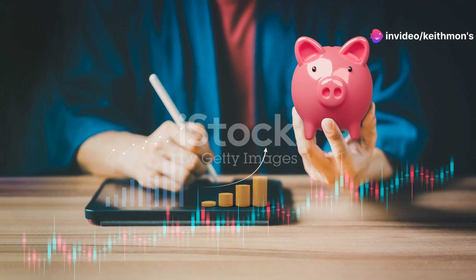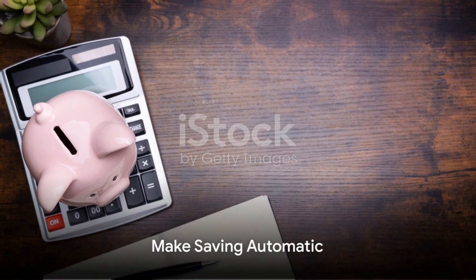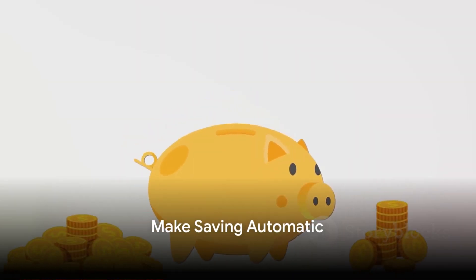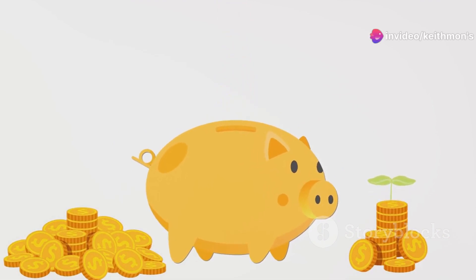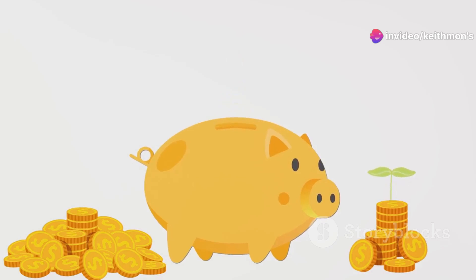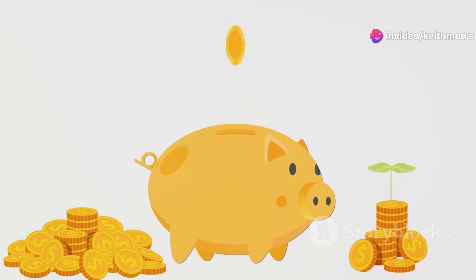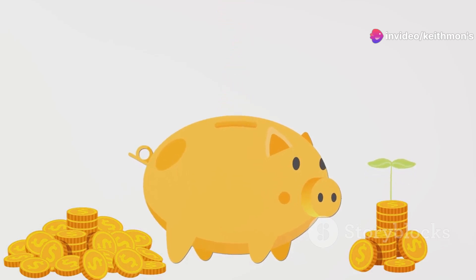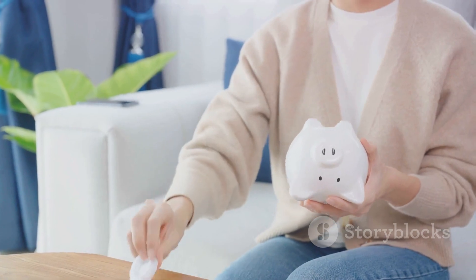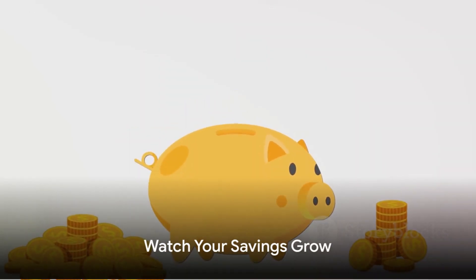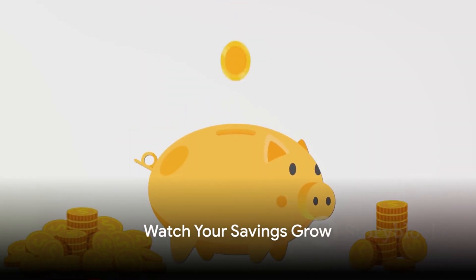Make saving automatic, which is your seventh step. Utilize tools like automated transfers between your checking and savings accounts. Set up your account so a portion of each paycheck automatically goes into savings. This method reduces the temptation to spend what you should be saving.